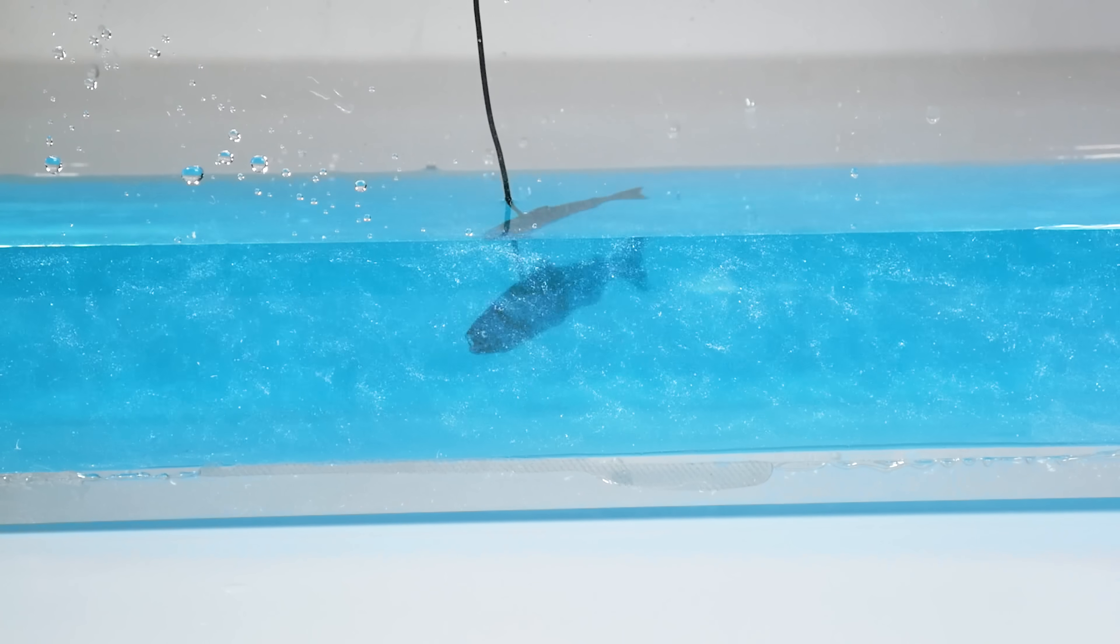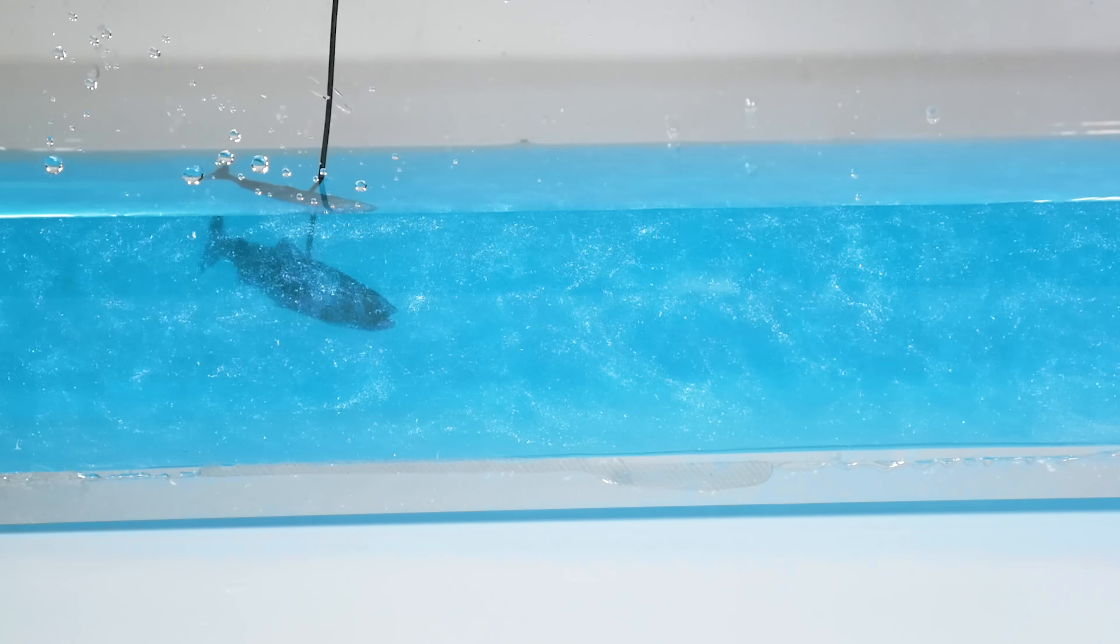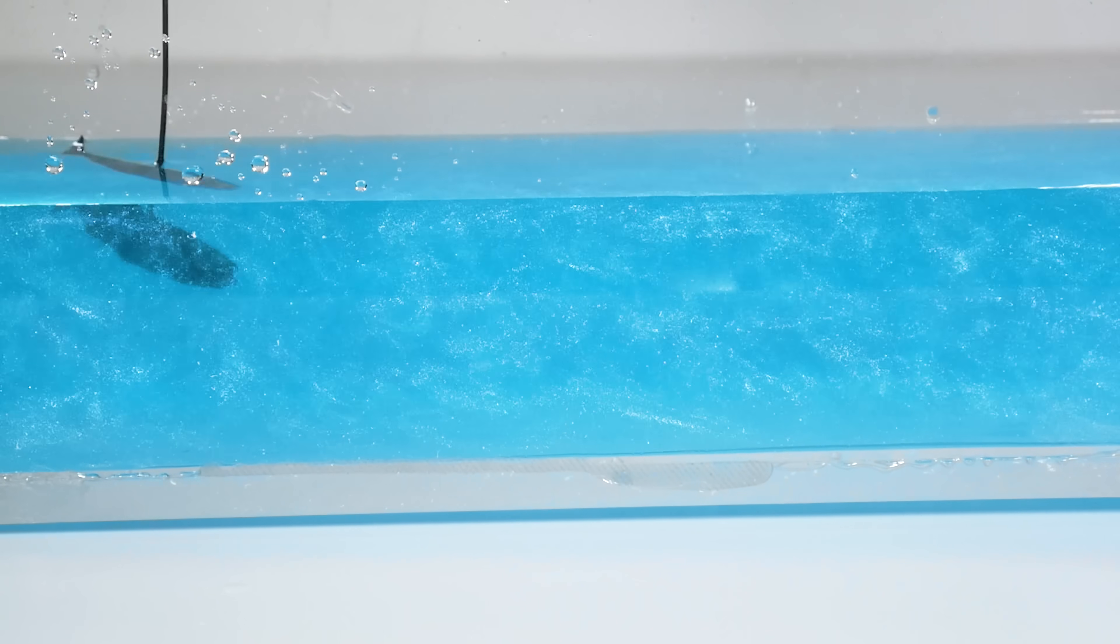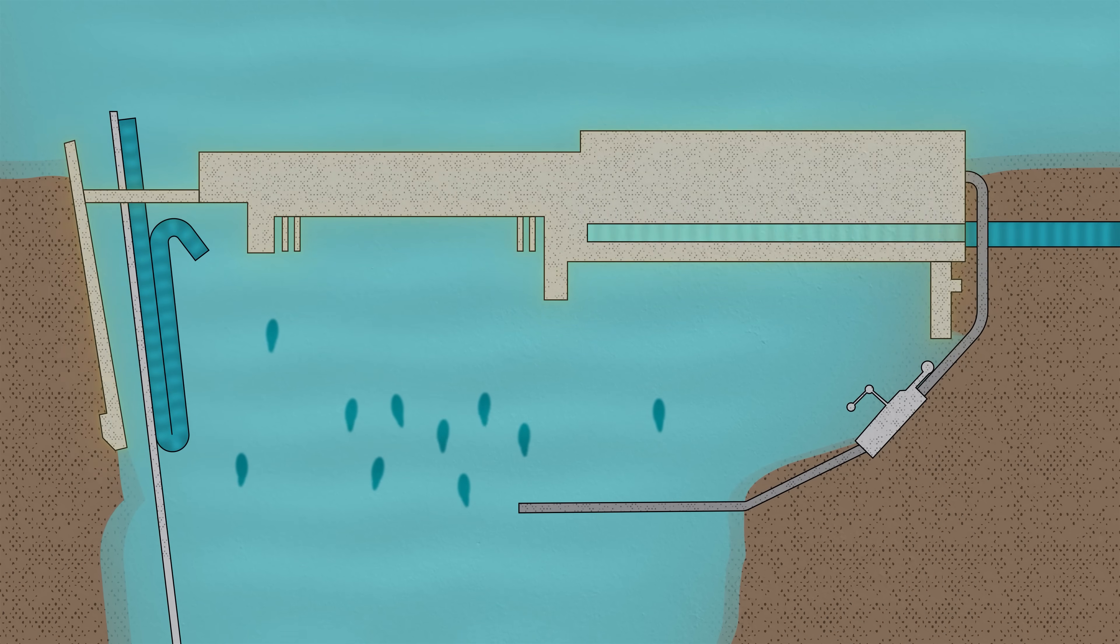But fish not only need specific flow to swim through, they also need it to navigate. If flows through a ladder are too low, fish can become disoriented trying to find which way is upstream. And that's especially true at the entrance. A dam stretches the entire width of a channel, but the entrance to a fish ladder usually doesn't. So there has to be some way to draw them to the entrance. That's called attraction flow. Salmon use the sound and turbulence of flowing water to know which direction to swim, so a big part of fish ladder design is simply encouraging the fish inside.